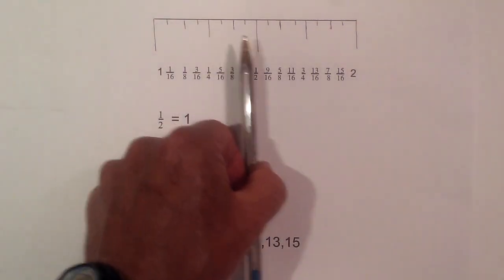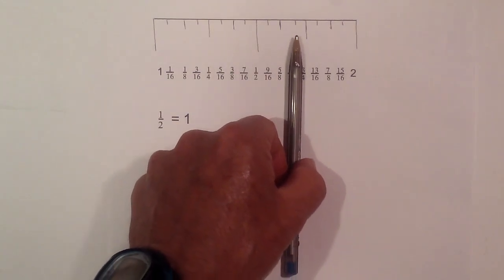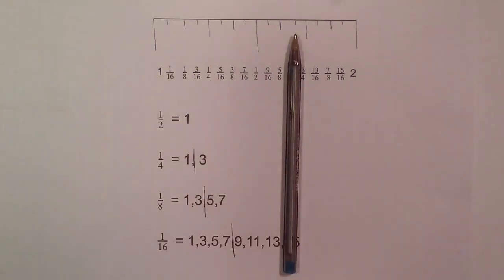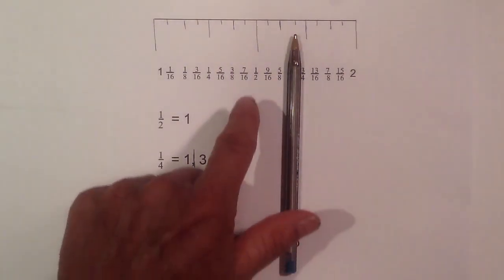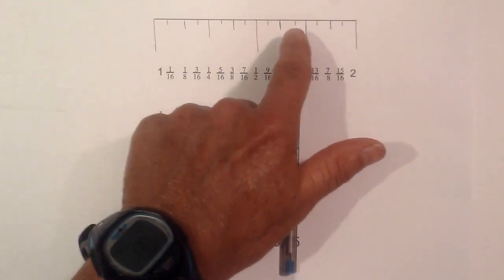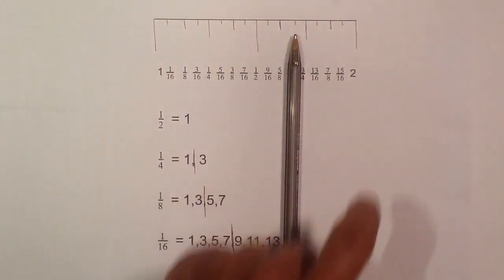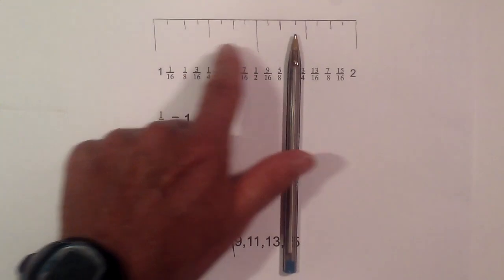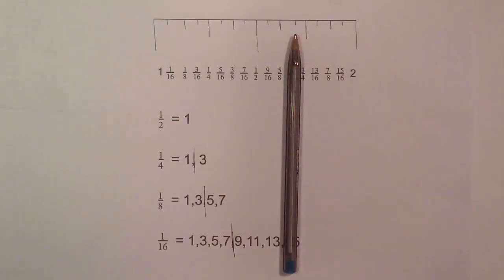How about this one? How about sixteenths? There's a lot of these. Again, I know it's the sixteenths because it's the smallest and it goes one, three, five, seven. And then I know after the one half, it goes nine, eleven, thirteen, fifteen. So here is nine. And I know that that's eleven. So that is one and eleven sixteenths.